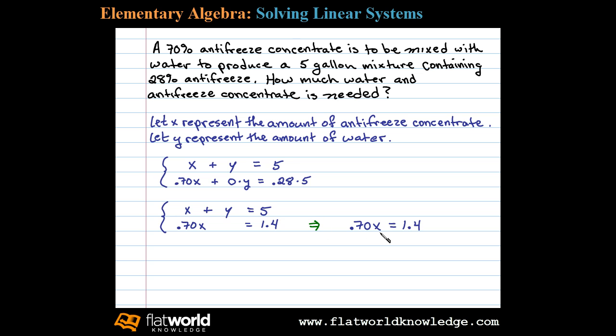To isolate X, all we need to do is divide both sides by its coefficient, .70. Doing that, we're left with X equals 2.